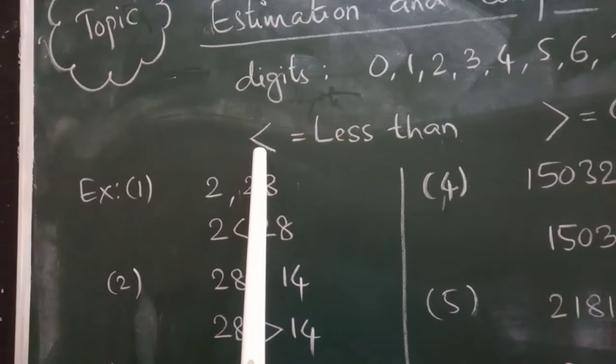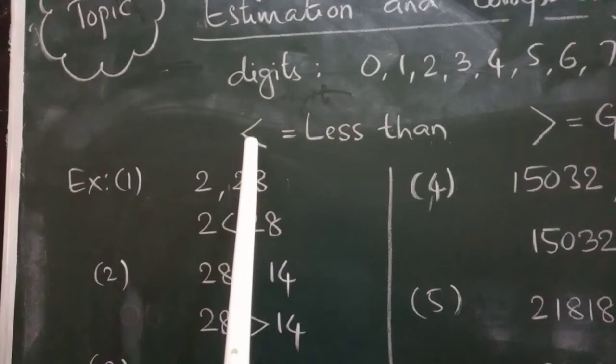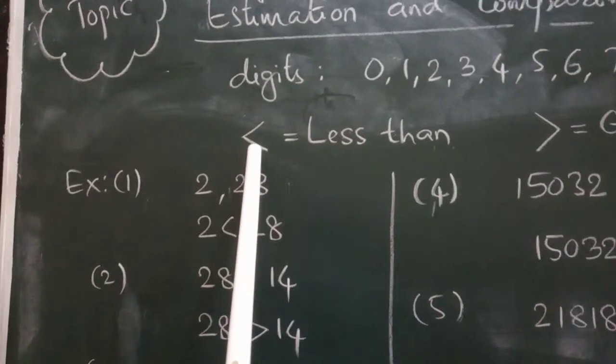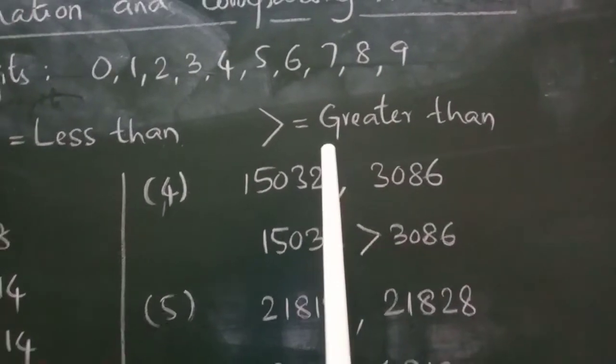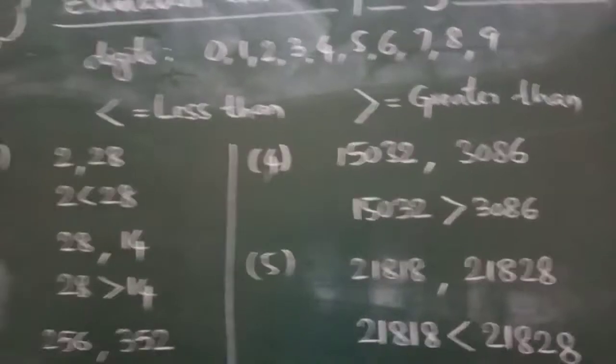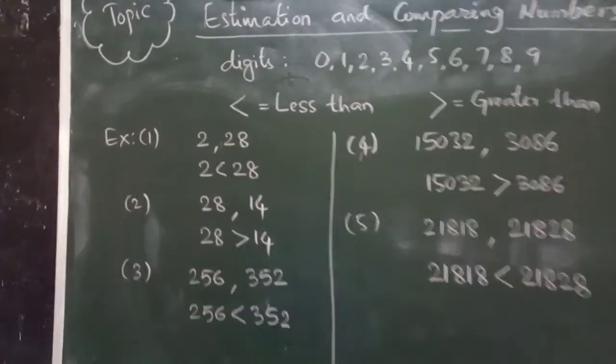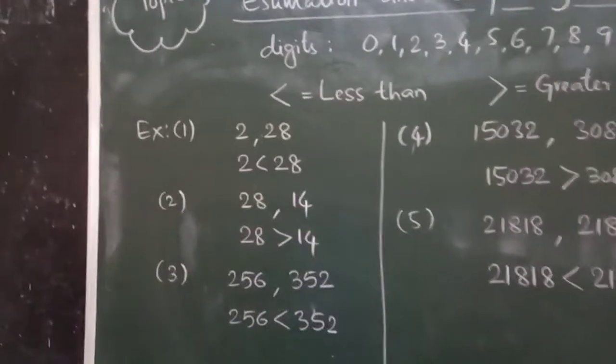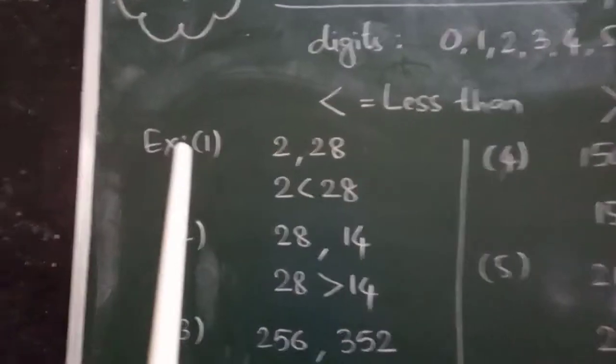And you know, this symbol, what is this? This is less than. And this is called greater than, means bigger. So, we will compare which is the bigger and which is the smaller. And the estimation. Here, some examples I will give you.